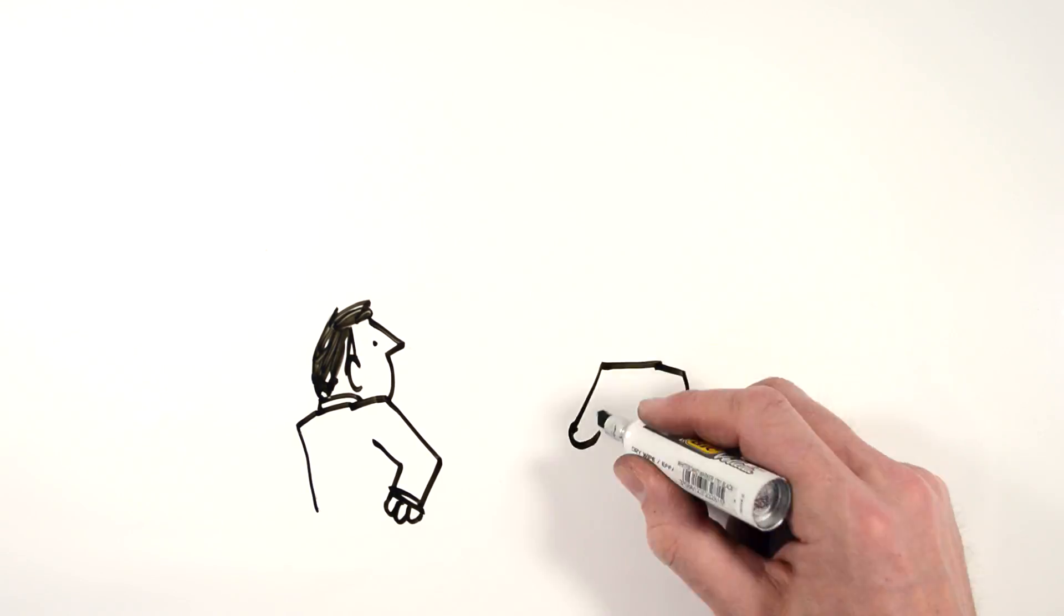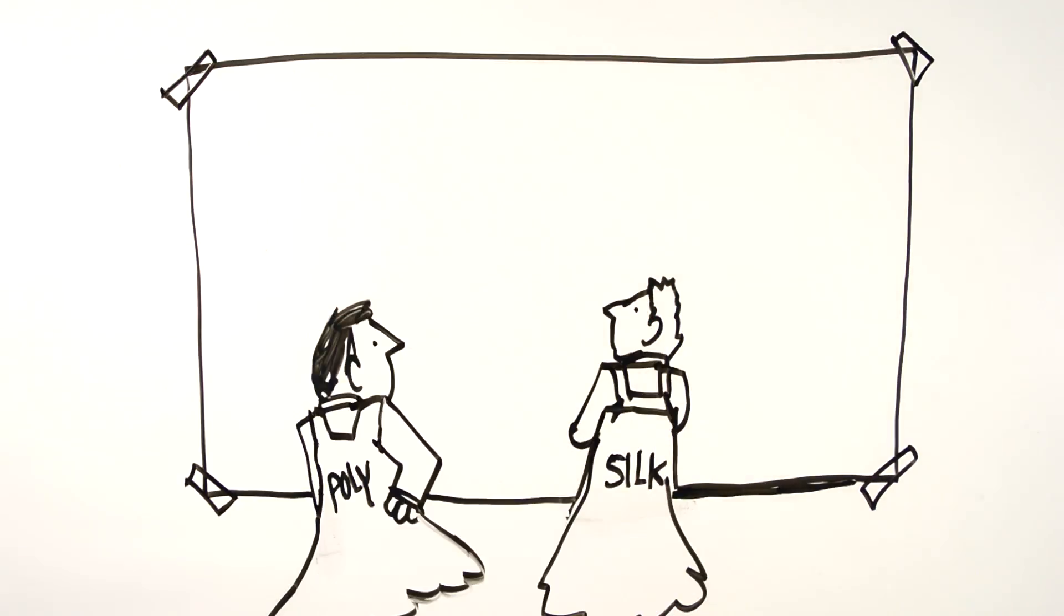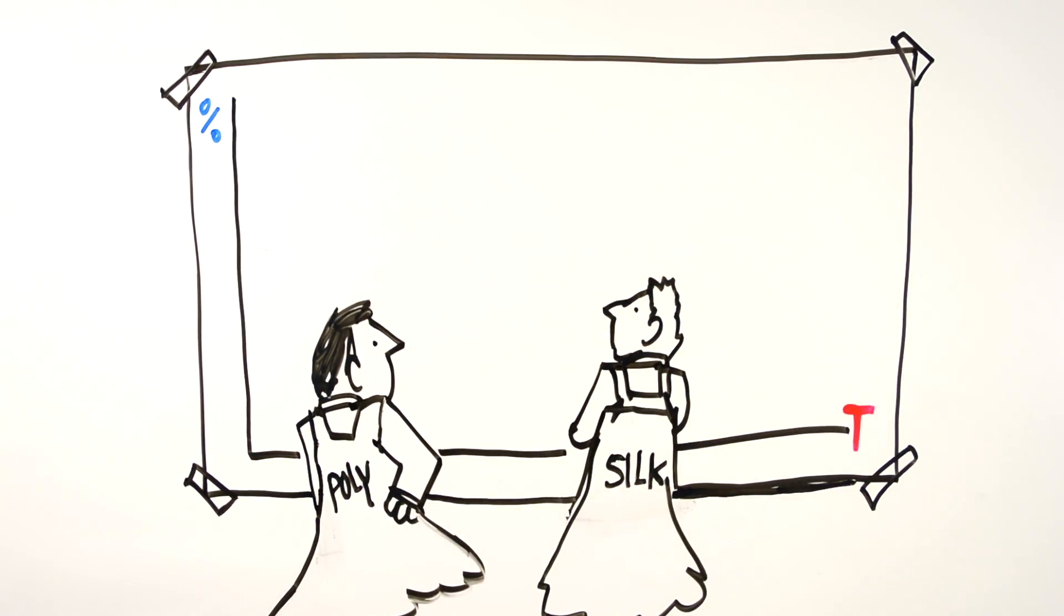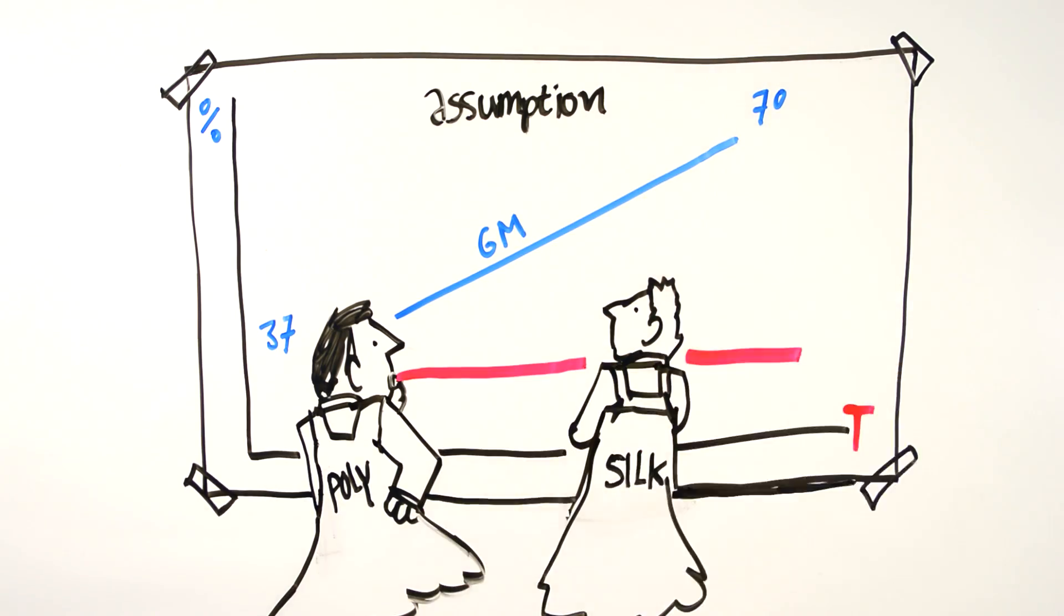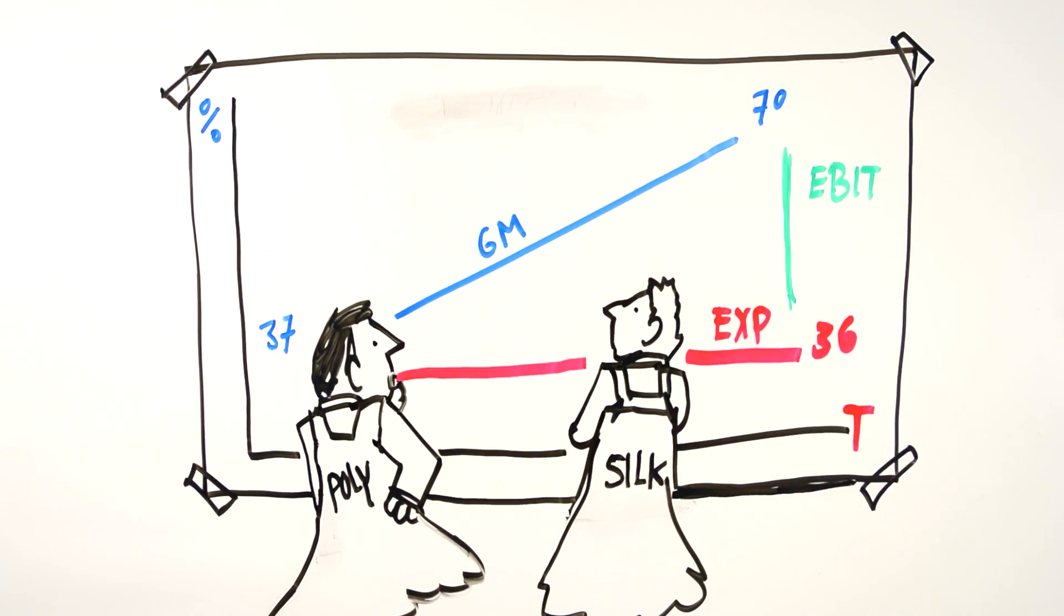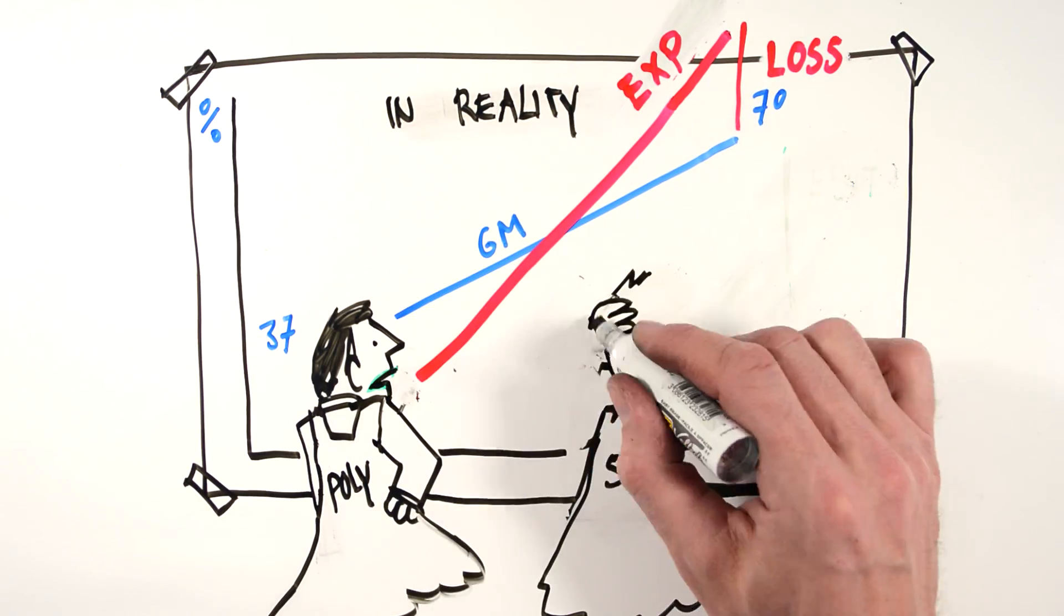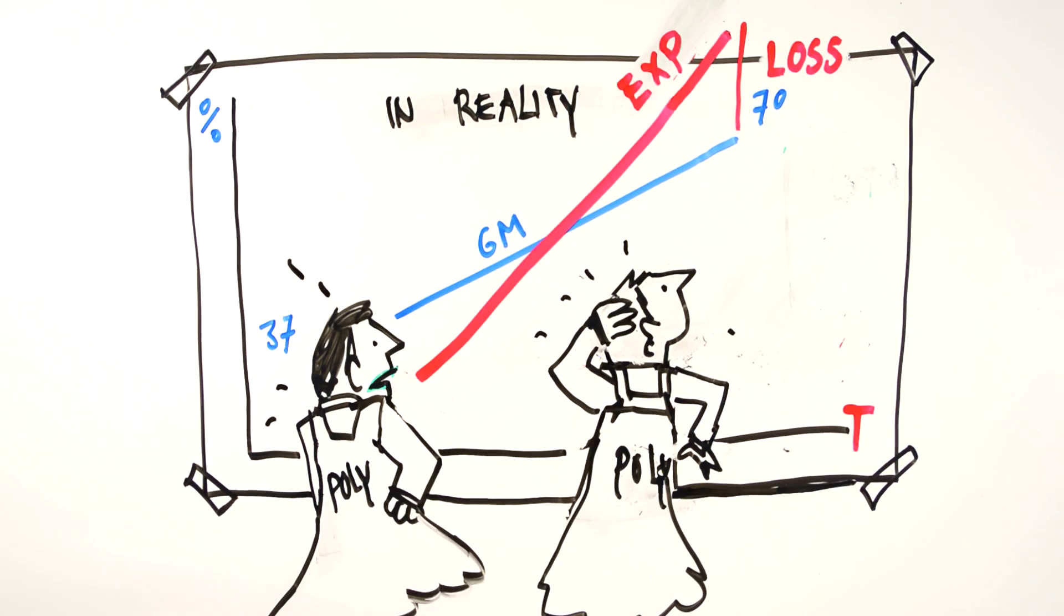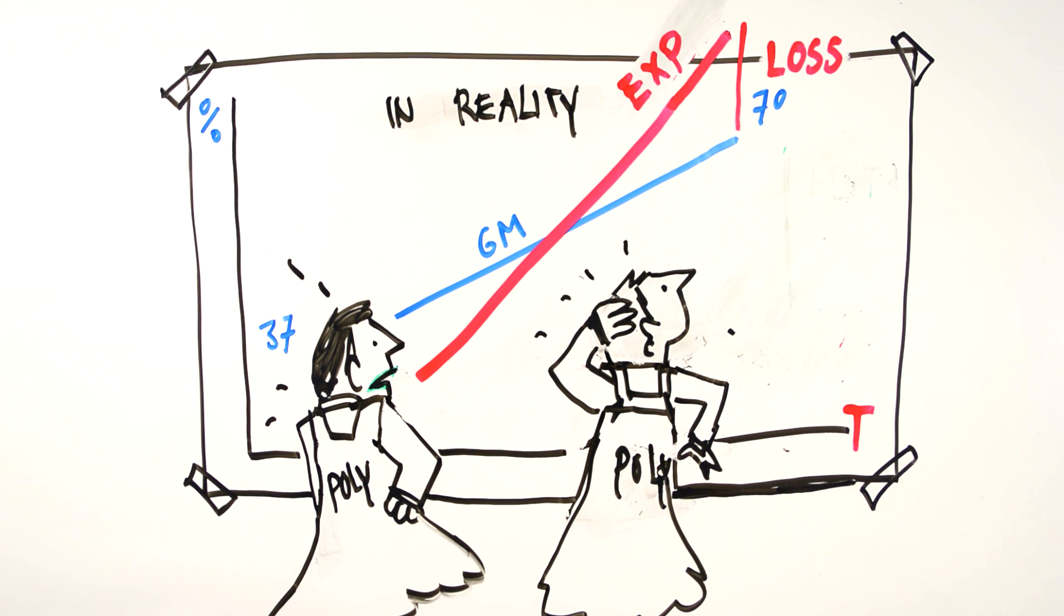Kmart, for example, worked to increase its average gross margin percentage by shifting to inexpensive high margin clothing, assuming it would increase earnings. The polyester dress assortment has a gross margin of 70%, but looking back, expense as a percentage of sales has increased to more than 100% of sales. Kmart went bankrupt as a result of barking up the wrong profit tree.